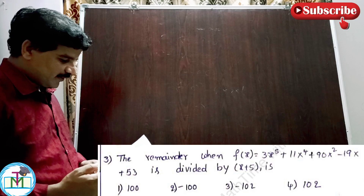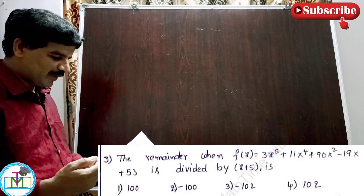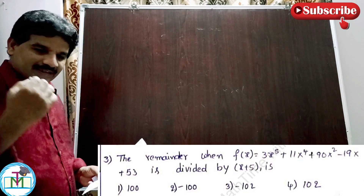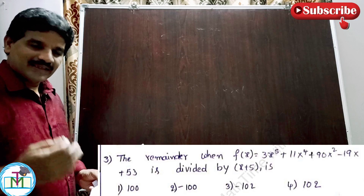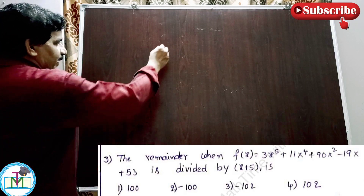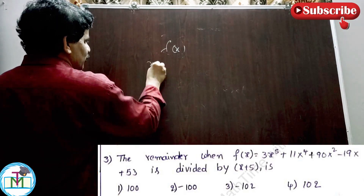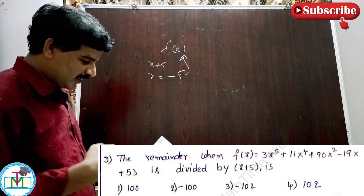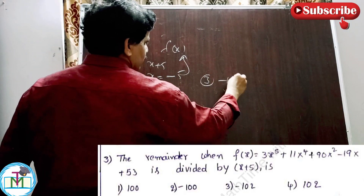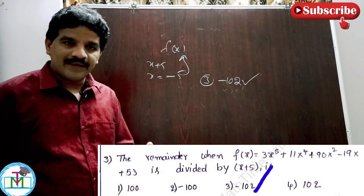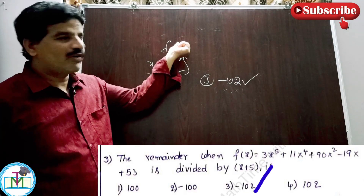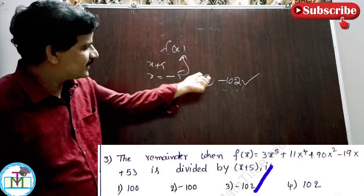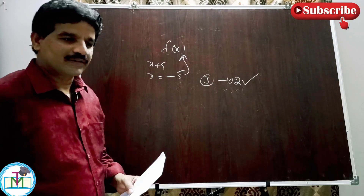Question number 3: Find the remainder when f(x) = 3x⁵ + 11x⁴ + 90x² - 19x + 53 is divided by x + 5. By the remainder theorem, when dividing by x + 5, substitute x = -5 into f(x). Using the shortcut: check option 3, which gives -102 as the right answer. For x + 5, substitute x = -5; for x - 5, substitute x = 5.